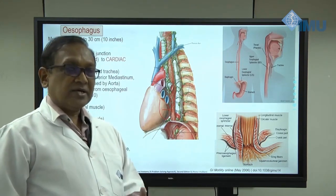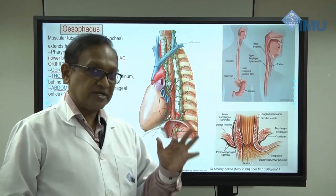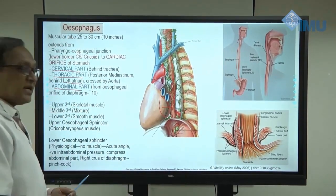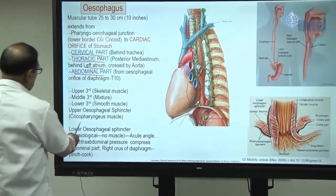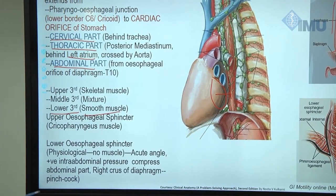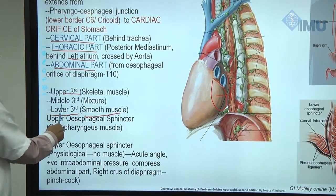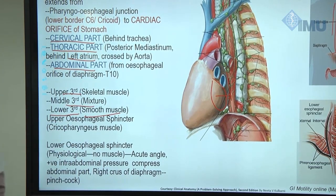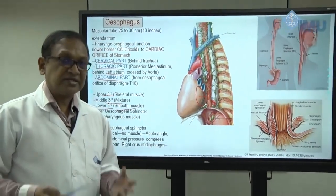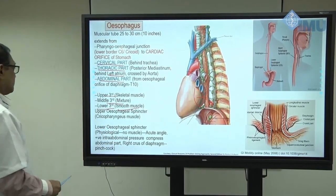In swallowing, the first stage inside the oral cavity is voluntary. The second and third stages in the pharynx and esophagus are involuntary. The lower one-third of the esophagus is smooth muscle and entirely involuntary, the upper third is skeletal muscle, and the middle third is a mixture. The upper esophageal sphincter — thyreopharyngeus, cricopharyngeus — is skeletal and voluntary, whereas esophageal muscle in the lower part is involuntary.